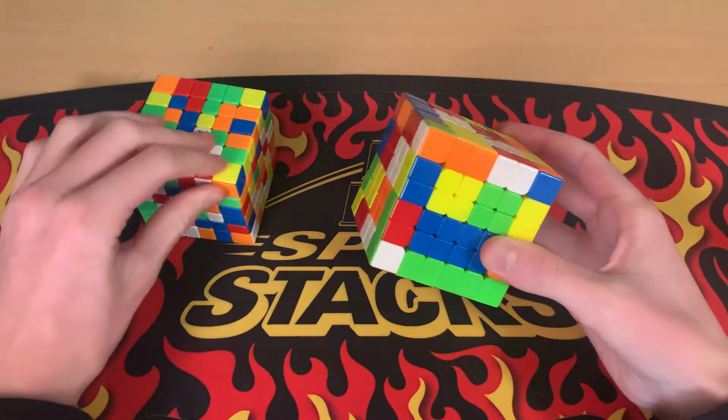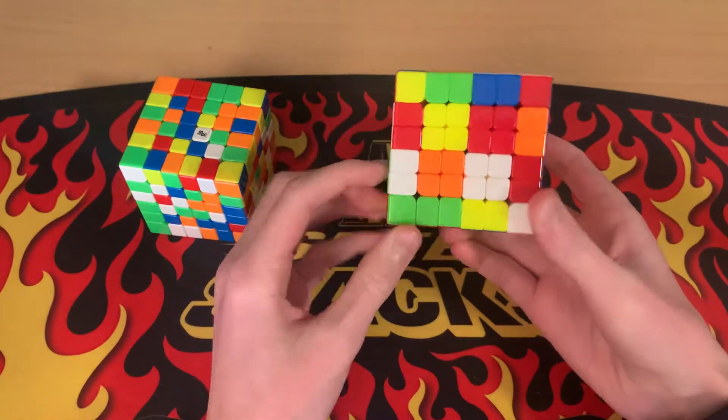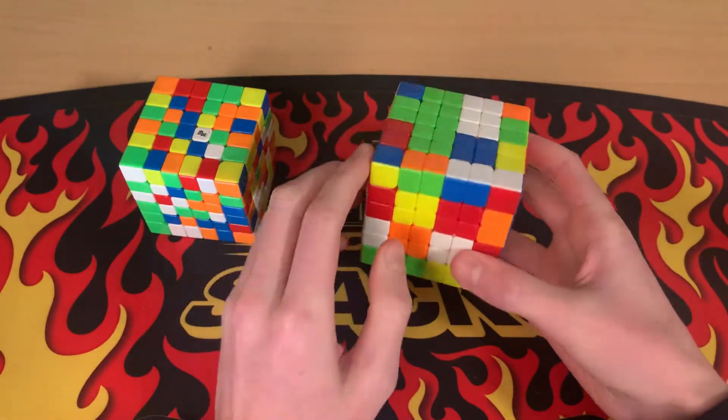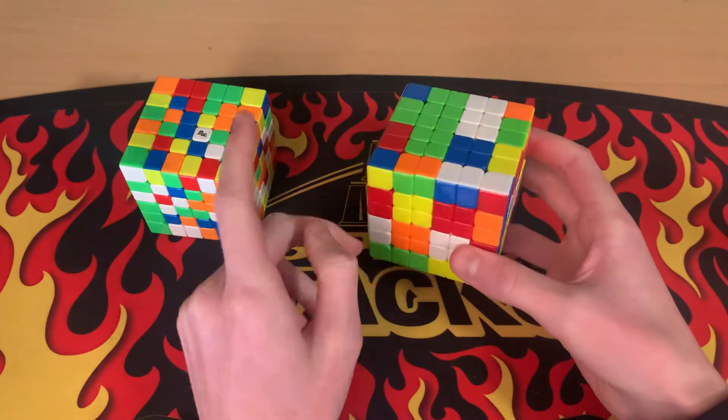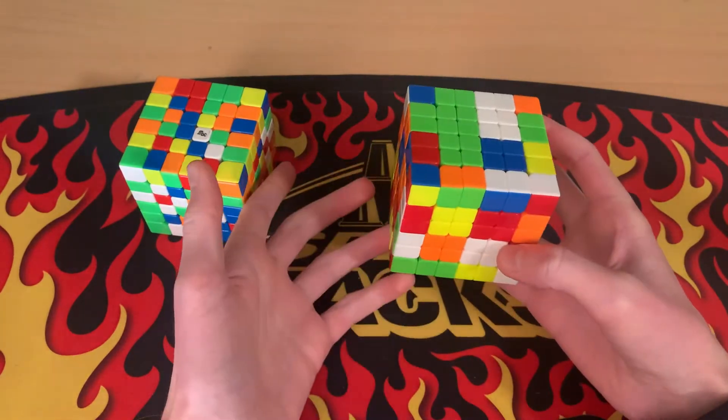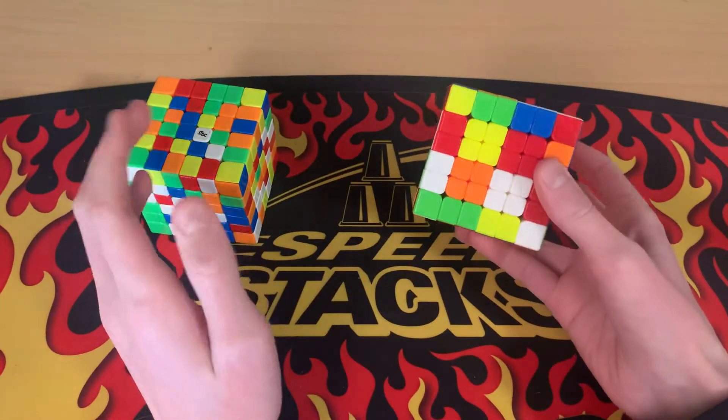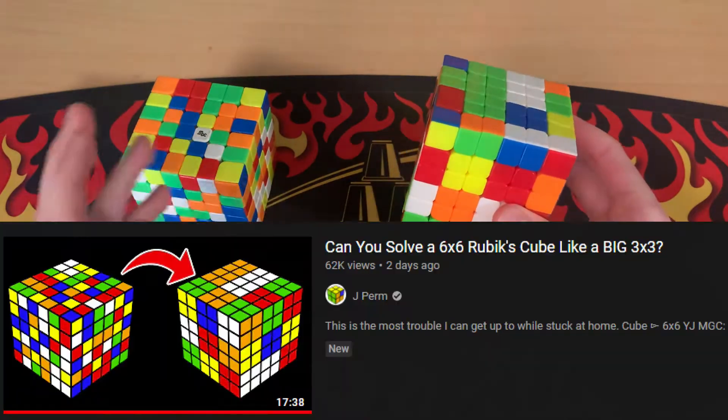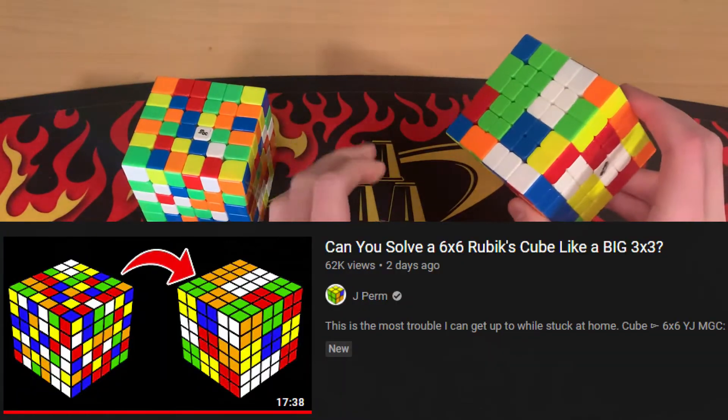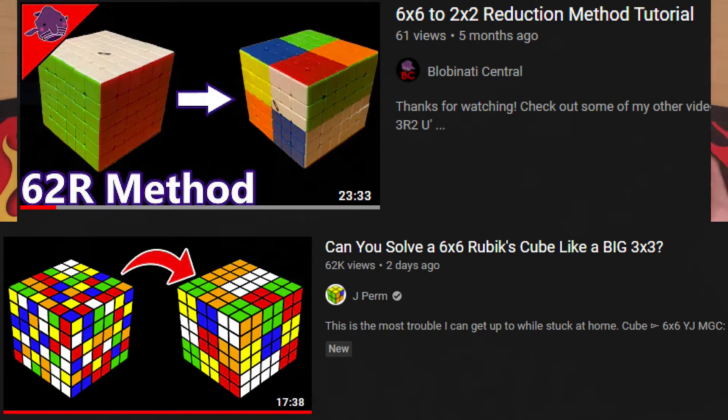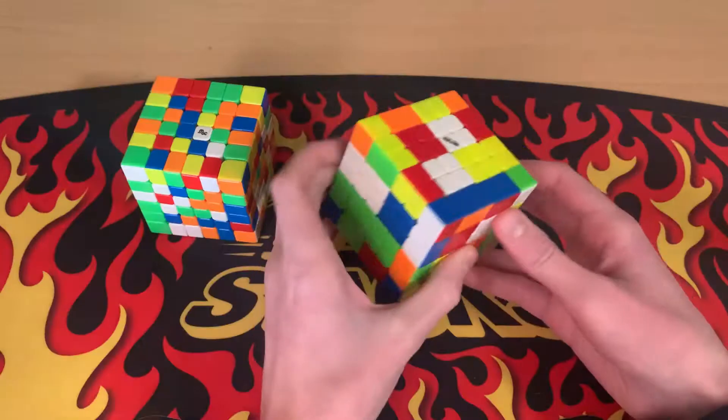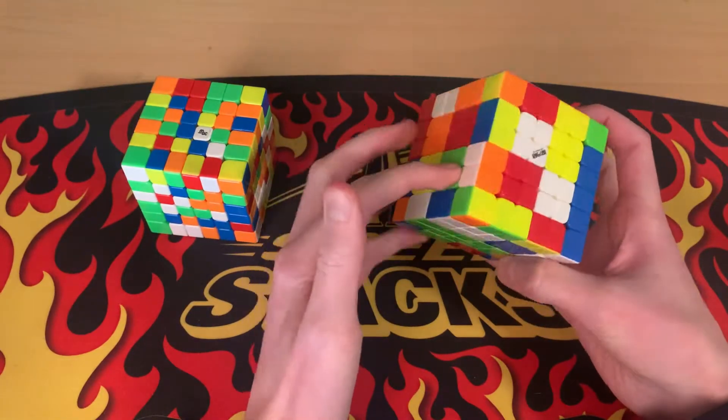So this is what the 6x6 reduced into a 4x4 looks like. The centers are little 2x2 blocks and the edges are 1x2x2 and the corners are just normal corners. Jperm recently released a video reducing a 6x6 into a 3x3 and I made a video a few months ago reducing a 6x6 into a 2x2 so now I'm just going to do the other one which is reducing a 6x6 into a 4x4.